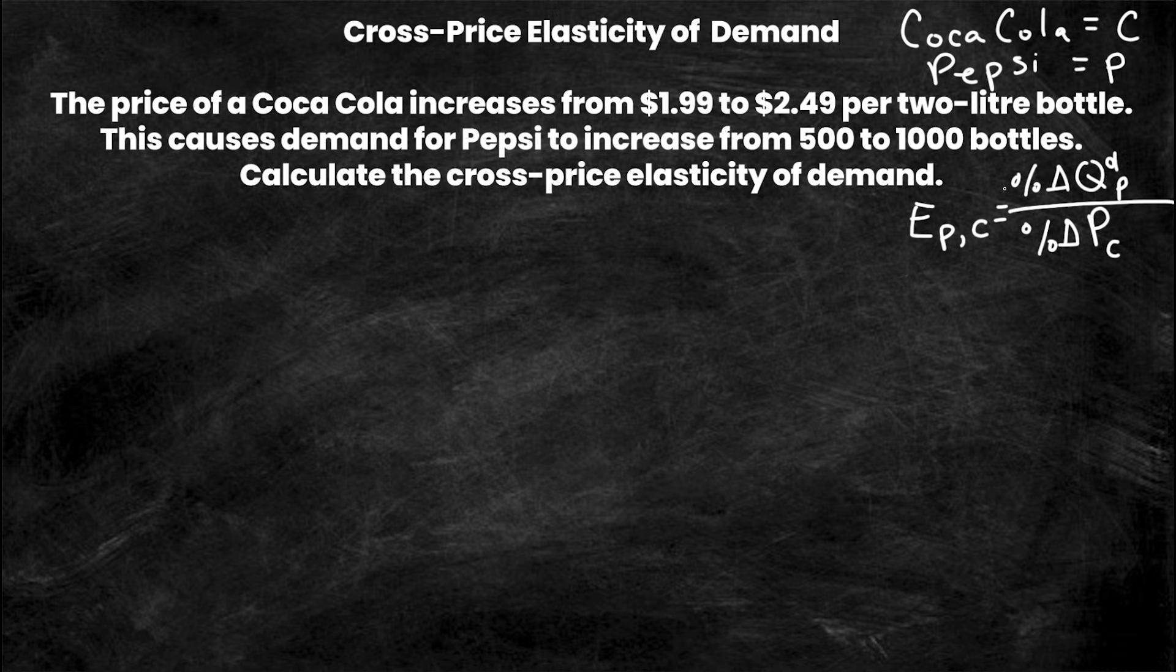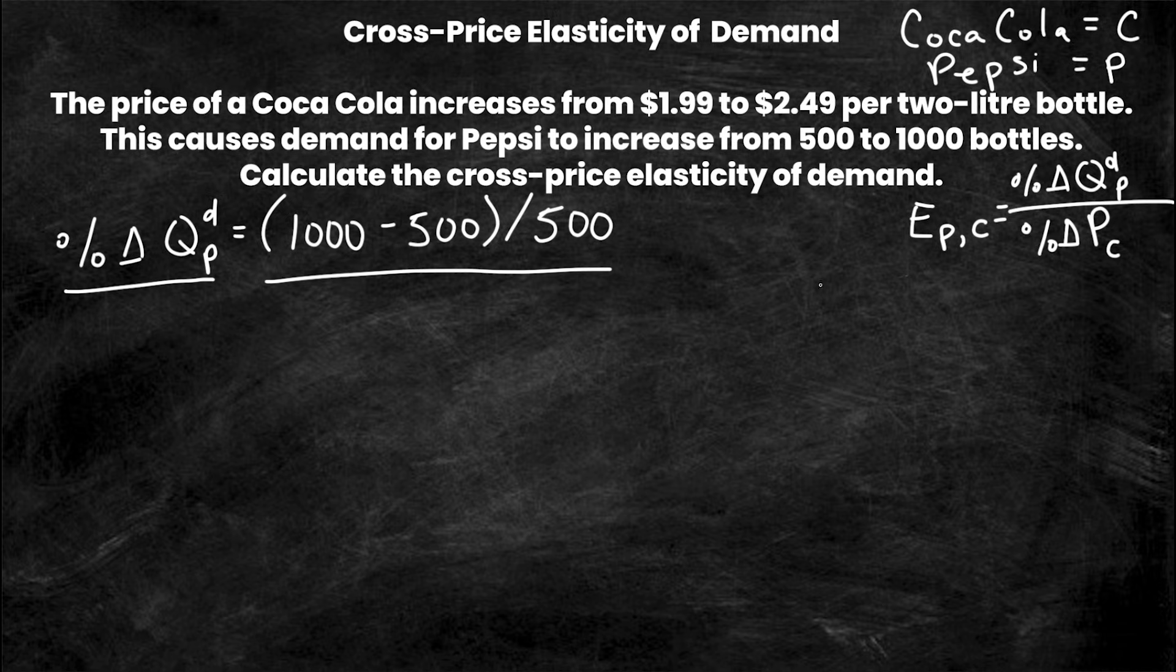So this is my formula right here and now I'm simply going to calculate percentage change the same way that we've done the last couple of weeks. So I have percentage change in quantity demanded of Pepsi is simply equal to new minus old over old. So the new value is 1000, remember this formula new minus old which is 500 over old which is 500. And again if you don't know what formula I'm talking about, then feel free to watch the previous two videos or actually the previous three videos where we go over how to calculate percentage change.